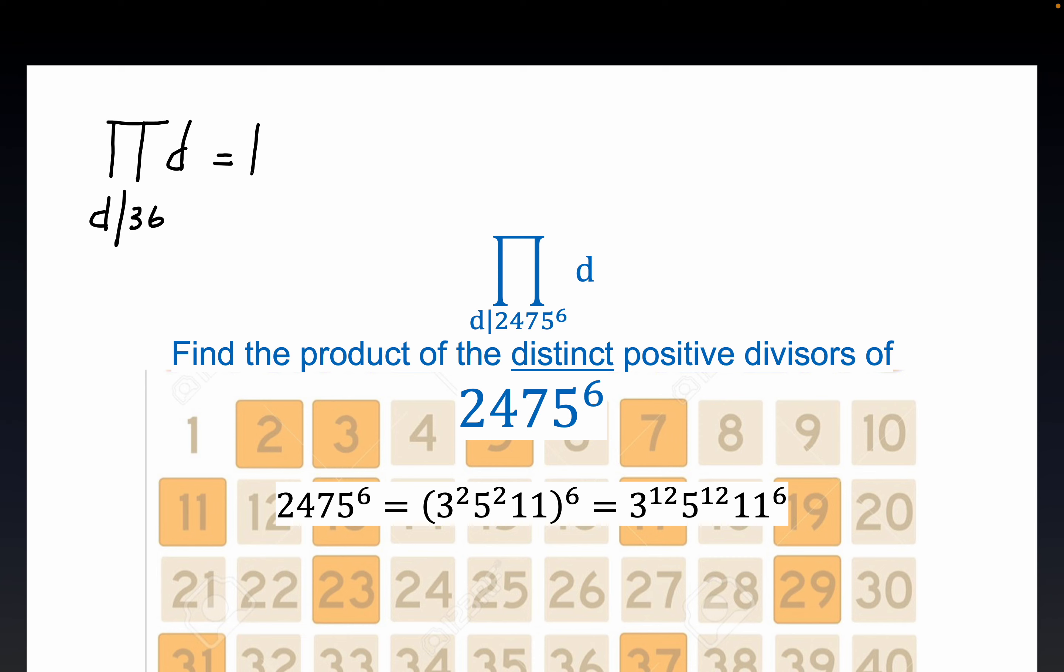So one's a divisor of any integer, two's a divisor of 36, three's a divisor of 36, four is a divisor. What else we got? Six. Now, six is the only divisor that doesn't pair off with anything, which will play into what we're doing today. Nine, 12, 18, and 36. Now, again, I'm not going to multiply these out, but that's what this pi notation means.